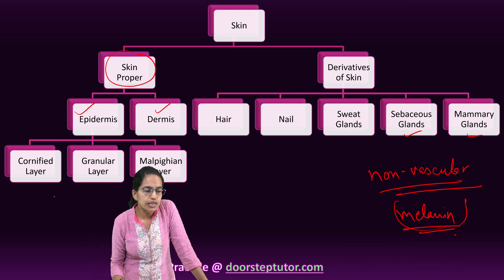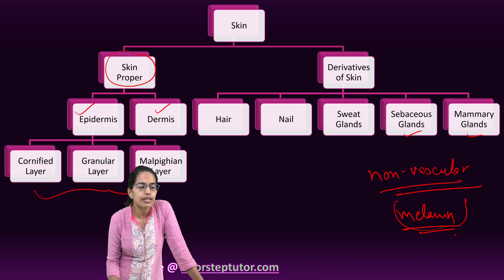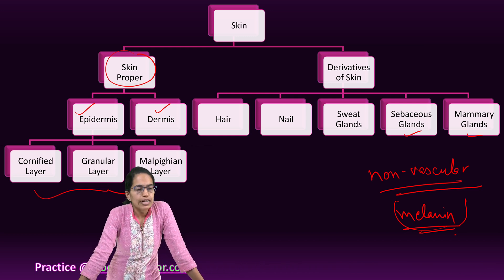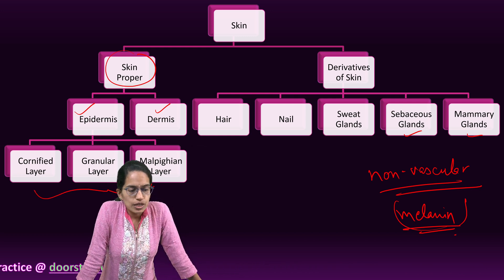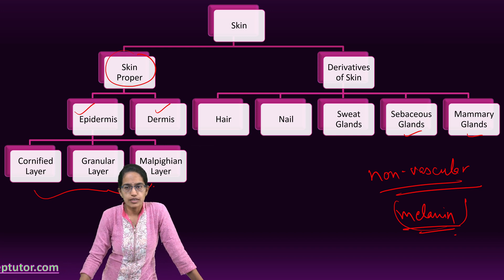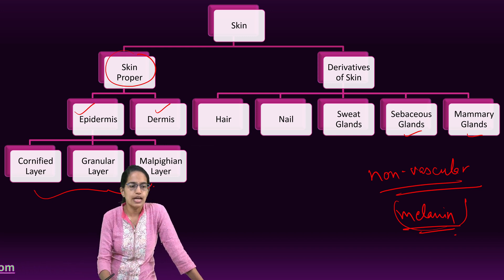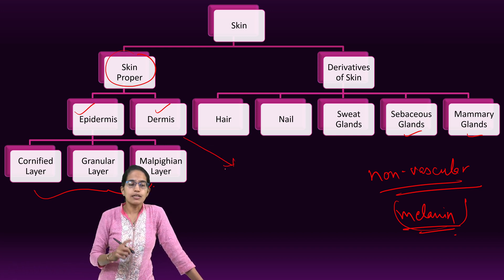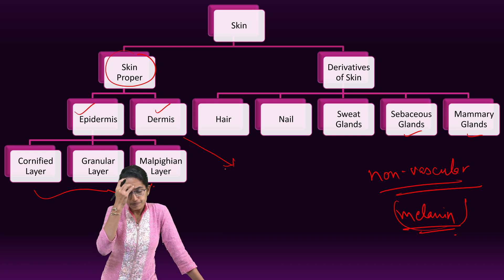Another important function of the epidermis is to protect the internal organs of the body. This epidermis is further classified into three aspects: the cornified layer, the granular layer, and the Malpighian layer, which we would understand later.